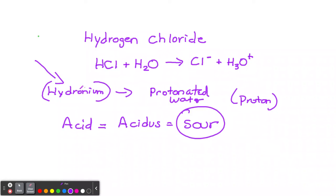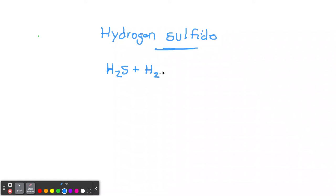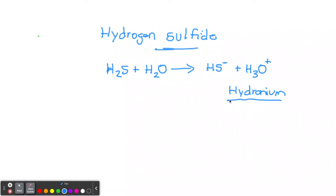So we had hydrogen chloride and we know that we yielded hydronium. Let's look at another. Let's say we have hydrogen sulfide — H₂S. You may notice that hydrogen is in all acids. When we mix hydrogen sulfide with water, it is going to yield a hydrogen sulfide negative ion, plus — you guessed it — hydronium. So both hydrogen chloride and hydrogen sulfide yield hydronium.